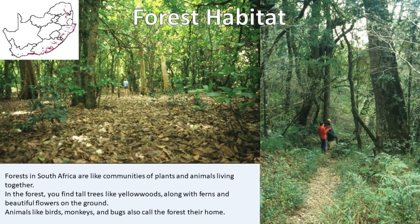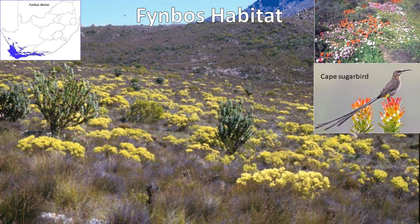In South Africa there are special places called forests — like communities of plants and animals living together. In the forest you find tall trees like yellowwoods, along with ferns and beautiful flowers on the ground. Animals like birds, monkeys, and bugs also call the forest their home. South Africa also has the Fynbos habitat, located in the Western Cape and parts of the Northern Cape. It's known for its unique and colorful plants like proteas, and cool animals like the Cape sugarbird and chameleon.